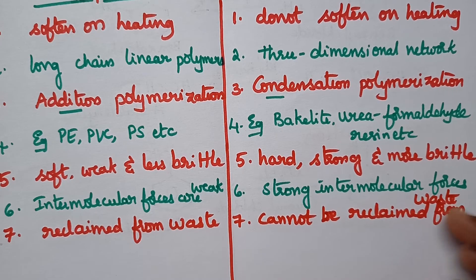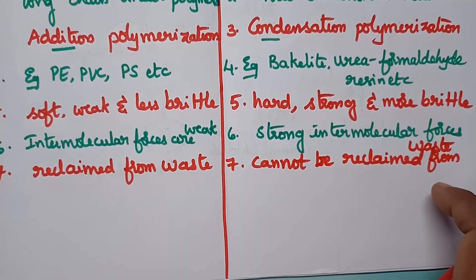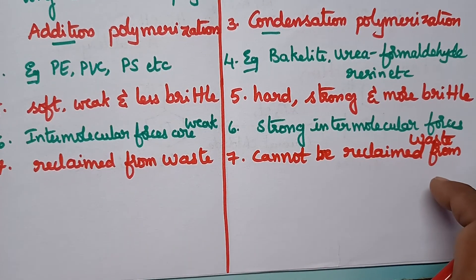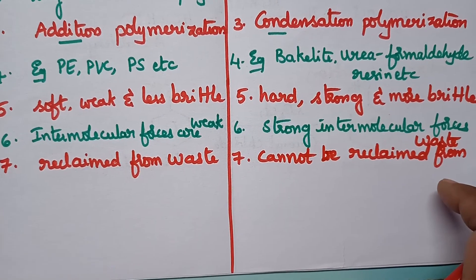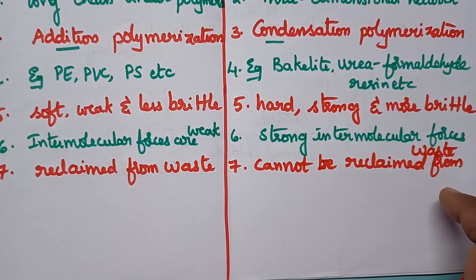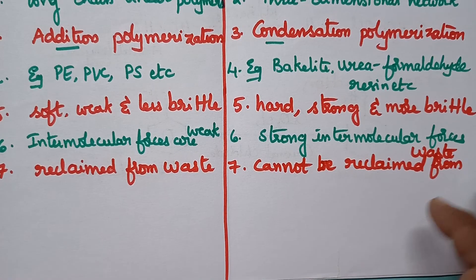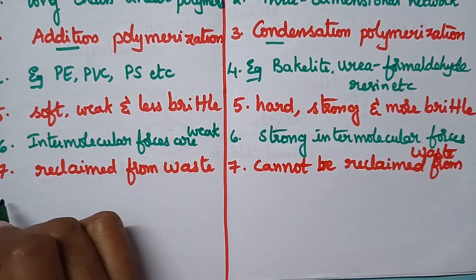That means after using thermoplastics, the waste can be reused or can be reshaped. Thermoplastics can be reshaped and reused, whereas thermosetting plastics cannot be reclaimed from waste.